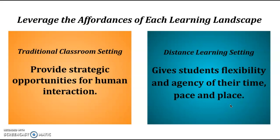If we do distance learning lessons well, I believe one of the greatest affordances in this learning landscape is that students have flexibility and agency of their time, pace, and place. In a concurrent classroom, instructional models that help us leverage the affordances of both of these learning landscapes will be most successful. For example, in a station rotation model, students would have opportunities for strategic human interaction in small groups in one station and opportunity for self-paced work in another station.